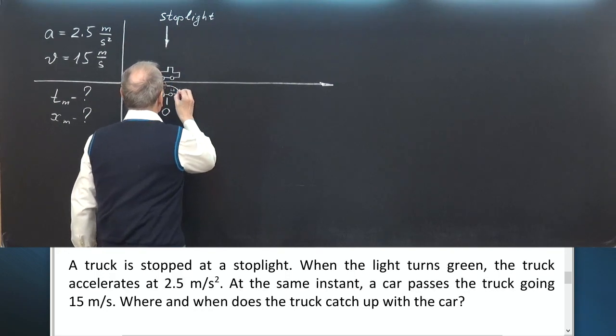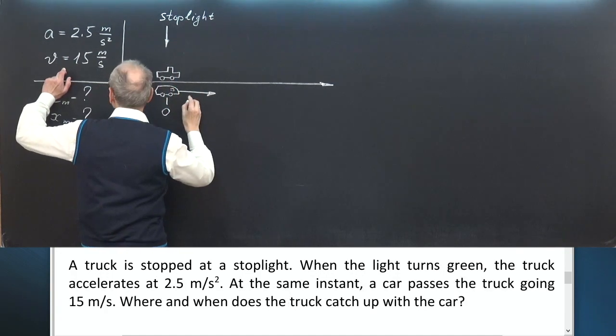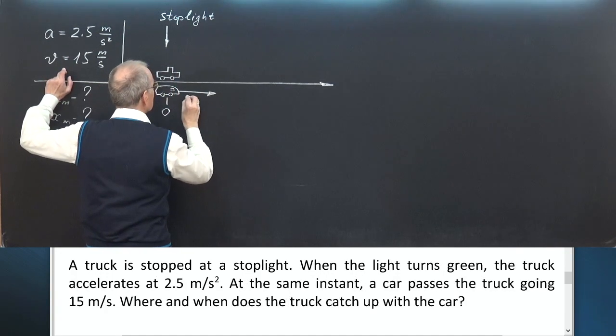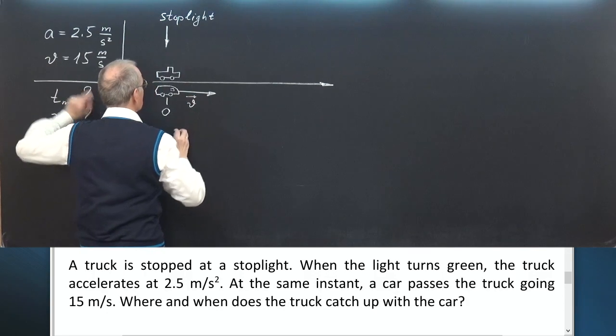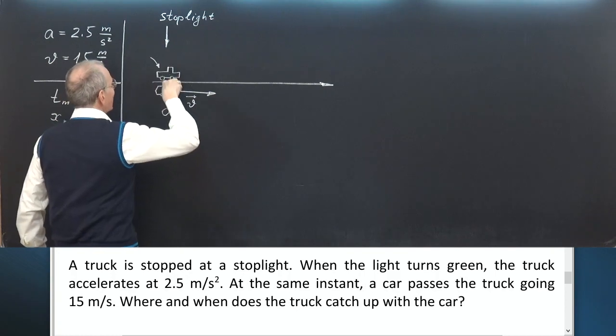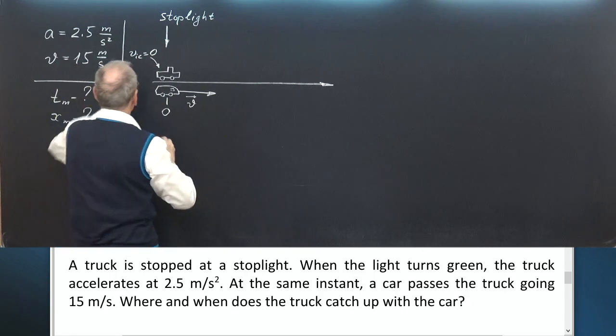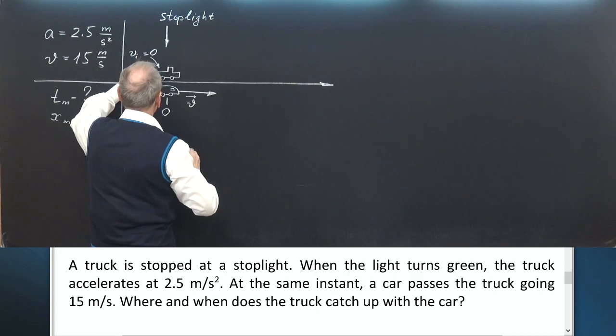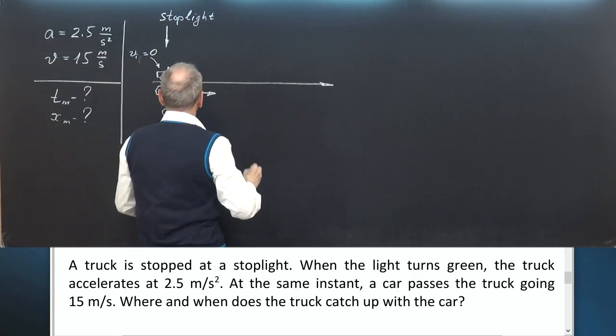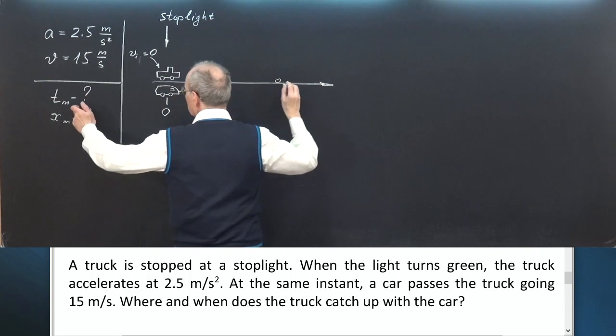The car is moving at velocity V. The truck stands immovable. The initial position of the car, x0, is zero. At the moment T, truck is zero.